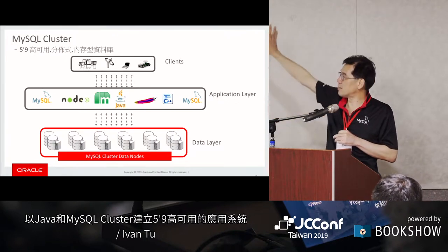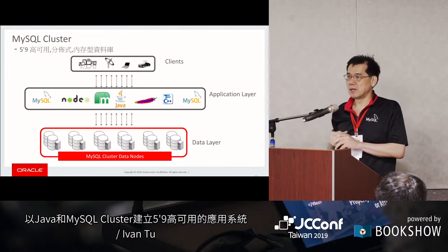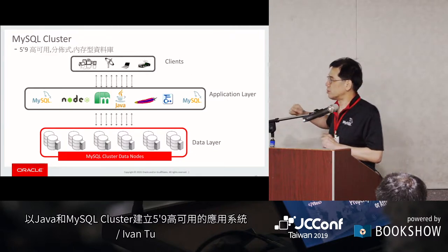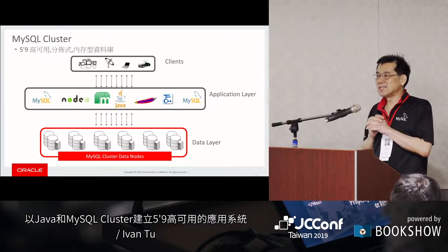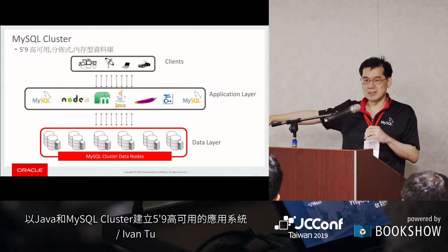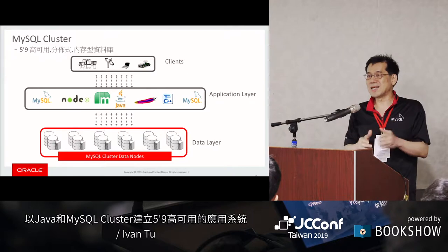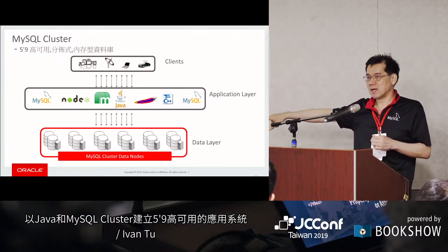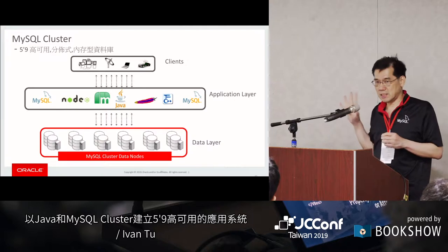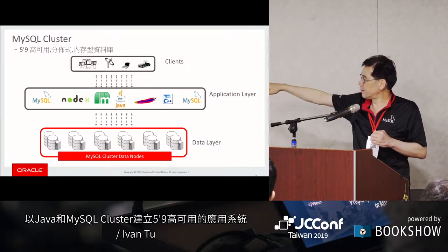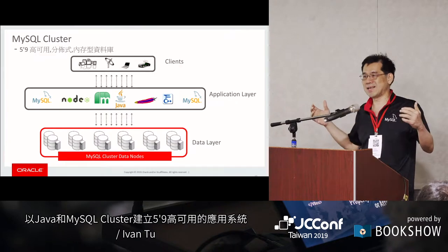MySQL Cluster的架构分三层：最上面是AP客户端；中间是SQL节点（普通MySQL daemon，只作接口，不存NDB数据）；下面是Data节点层，存储真实数据，默认存两份（复制因子2）。最多支持48个Data节点，加上API节点（含SQL节点）总计最多255个节点，可实现非常大的scale-out。(MySQL Cluster has three layers: the AP client on top; SQL nodes (standard MySQL daemons serving as interface, not storing NDB data) in the middle; and Data nodes at the bottom storing actual data, defaulting to 2 replicas. The architecture supports up to 48 data nodes and up to 255 total API+SQL nodes, enabling massive horizontal scale-out.)